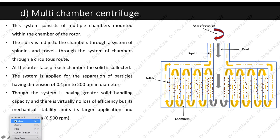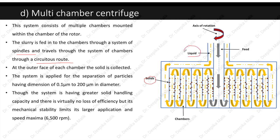The multi-chamber centrifuge consists of multiple chambers mounted within the rotor. Slurry is fed through spindles and travels through the chambers via a circuitous route. At the outer face of each chamber, solids are collected, while the clear liquid reaches the walls of the centrifuge and is taken out from the top. It handles particles of 0.1 to 200 micrometers in diameter. Though it has greater solid handling capacity and virtually no loss of efficiency, its mechanical stability limits larger application, with a maximum speed of 6500 rpm.